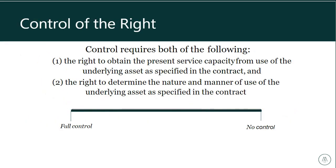To determine whether a contract conveys control of the right to use the underlying asset, a government should assess whether it has the right to obtain the present service capacity from use of the underlying asset as specified in the contract. The Board emphasized control to differentiate the right to use the asset from control of the underlying asset itself, which is retained by the lessor. This also differentiates leases from supply contracts like power purchase agreements, which provide access to output rather than control of the right to use the asset.